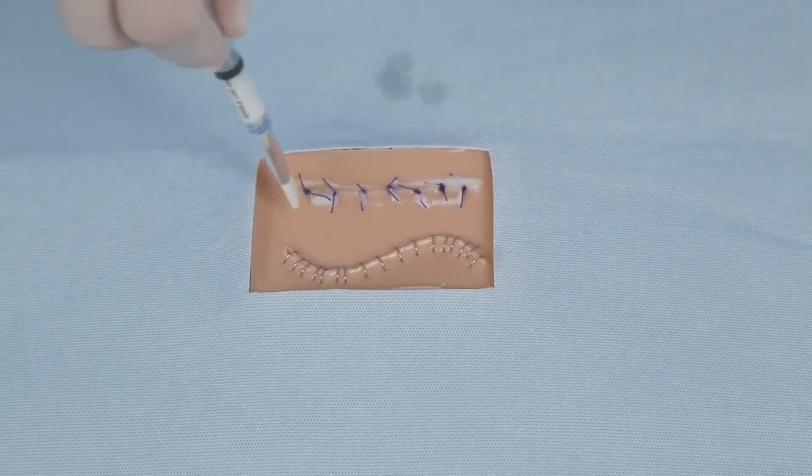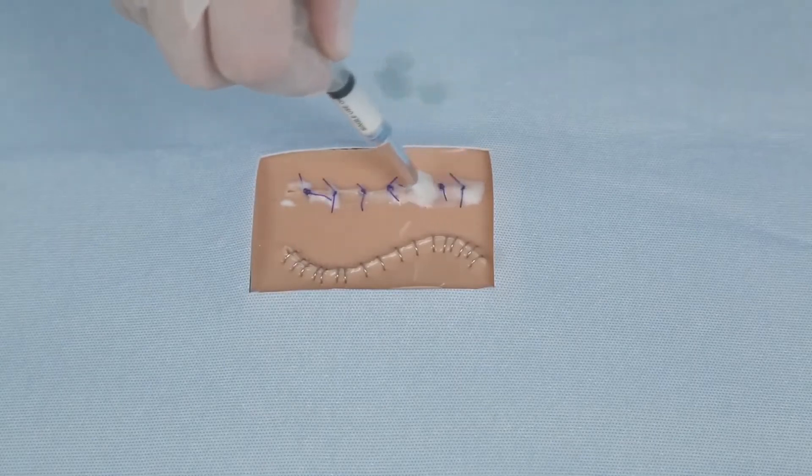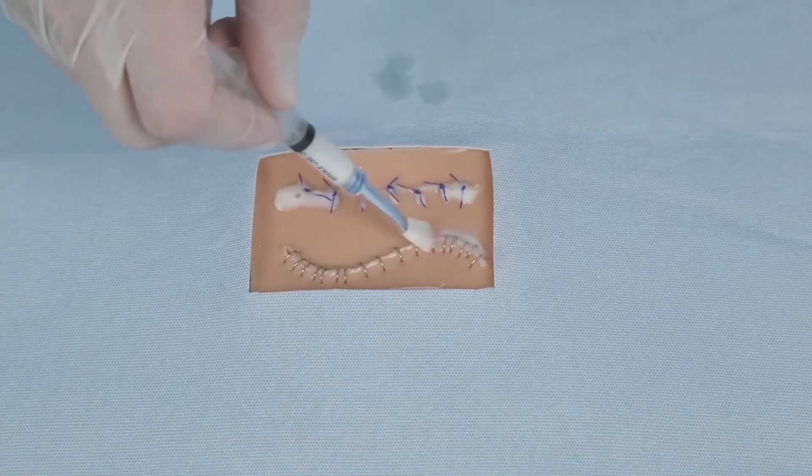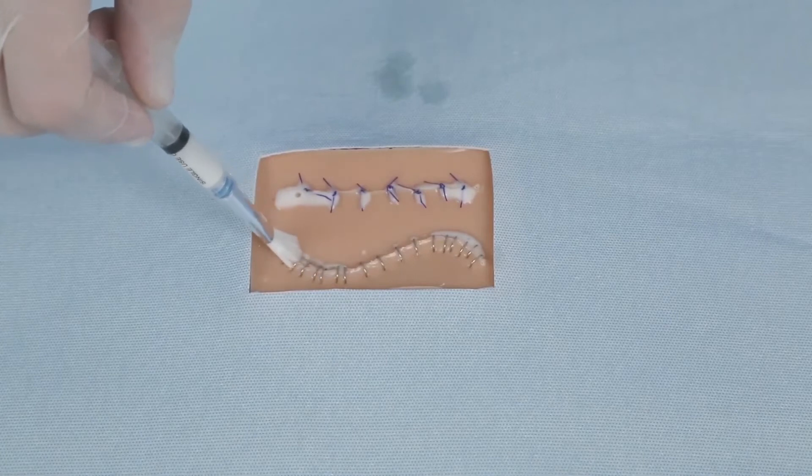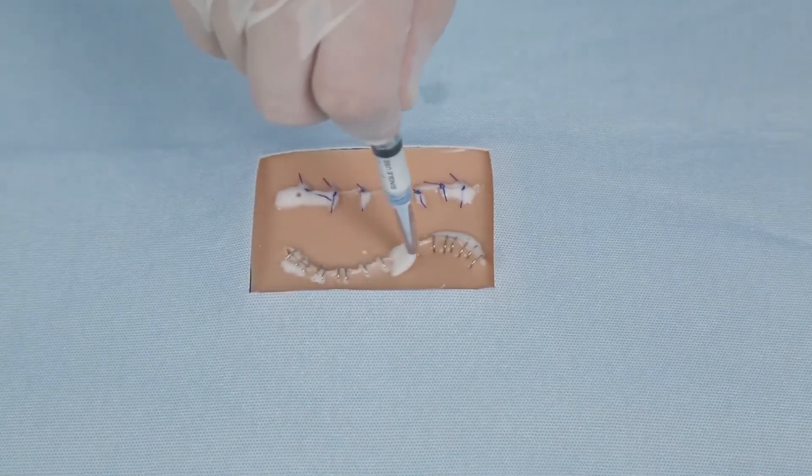Slowly push the syringe plunger until the SutureSeal polymer begins to dispense from the brush tip. Brush the SutureSeal polymer over the suture line or wound area in a thin even layer. SutureSeal is sometimes difficult to see because it is transparent or a milky white color. Runoff of excess liquid is expected.